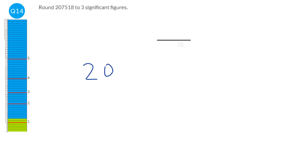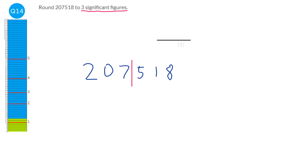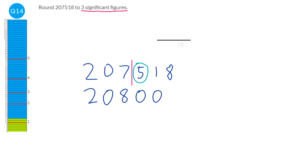We're asked to round this number to three significant figures. Starting from the left-hand side, we want three numbers — one, two, three — and we draw our line after that third number, starting from the first non-zero digit. All the numbers to the right turn to zero, but before that we look at the next digit. If it's five or more, we move the last kept digit up by one; if it's less than five, it stays the same. It is five, so it becomes 208 rather than 207. A common mistake is writing 208 without the trailing zeros — all numbers to the right of the line turn to zero. So the answer is 208,000.